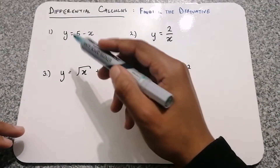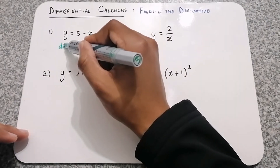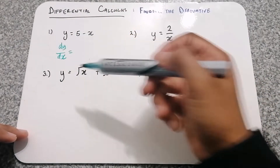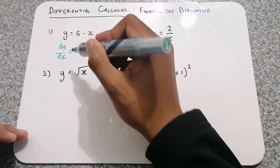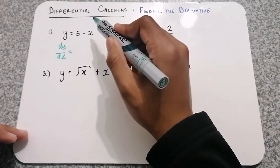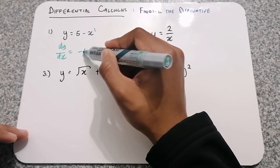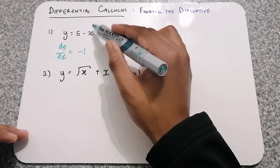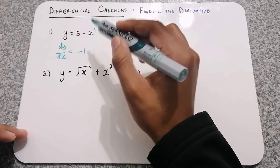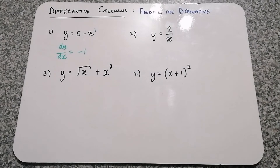For question 1, we have y is equal to 5 minus x. When we're differentiating with respect to x, the terms that don't have an x just become 0. So this 5 becomes 0. For the x, remember the exponent is 1. We multiply the 1 with the negative 1 in front, leaving us with negative 1. Since we're decreasing this exponent by 1, it becomes x to the power of 0, which is 1. So the answer is just negative 1.